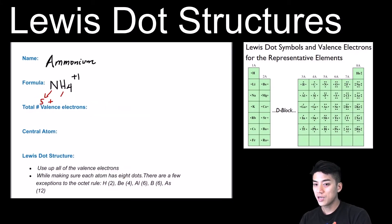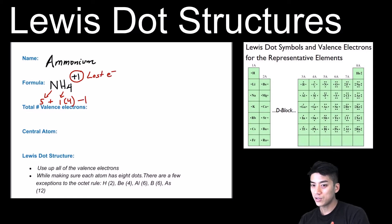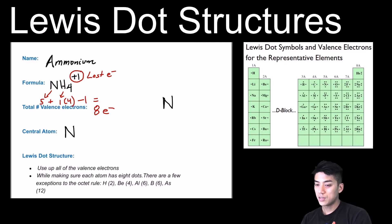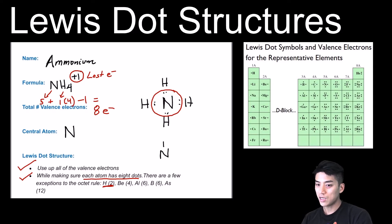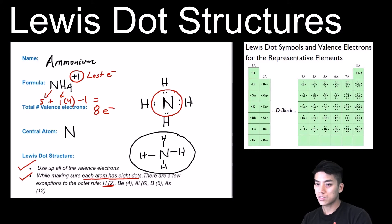Ammonium is NH₄ with a plus one charge. Nitrogen has five valence electrons, and hydrogen has one with four of them making four more. The plus one charge means it has lost one electron, so I take one away from the total, leaving eight valence electrons to place. I'll put nitrogen as the central atom surrounded by four hydrogens, bonding each with a pair of electrons — using up all eight. Nitrogen has eight dots, and each hydrogen has two, satisfying both conditions. Redrawing with lines gives the final structure for ammonium, NH₄⁺.